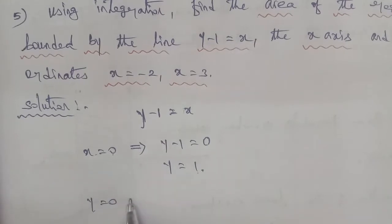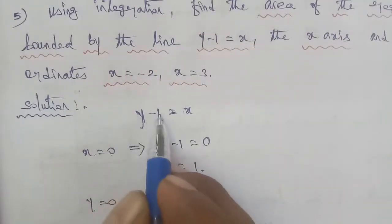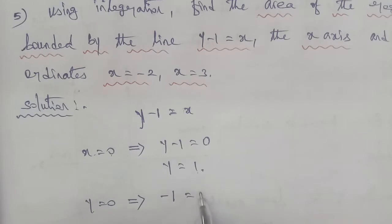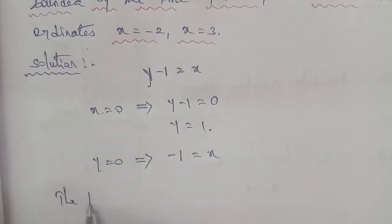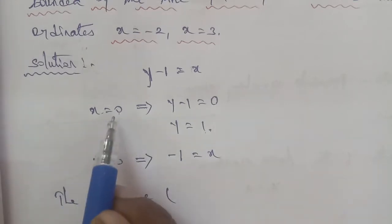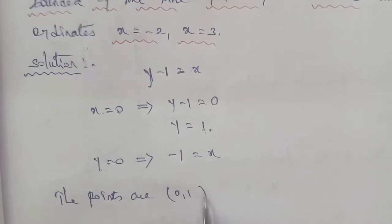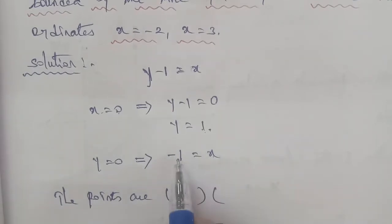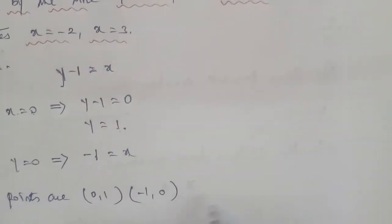Now put y equal to 0. So 0 minus 1 equals x, giving x equal to minus 1. So the two key points are: x equals 0, y equals 1, that is the point (0, 1); and x equals minus 1, y equals 0, that is the point (minus 1, 0).